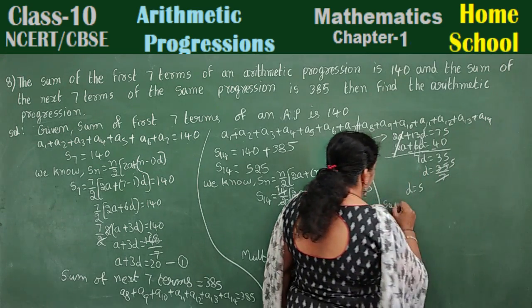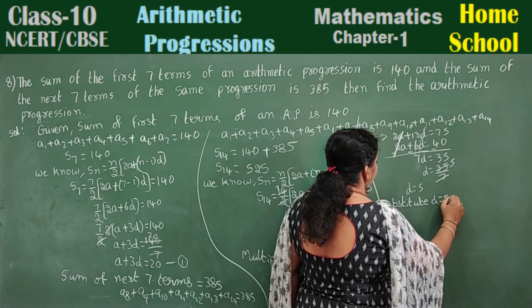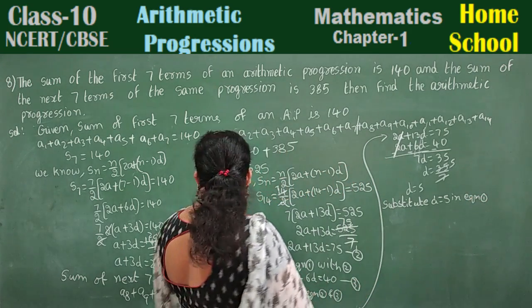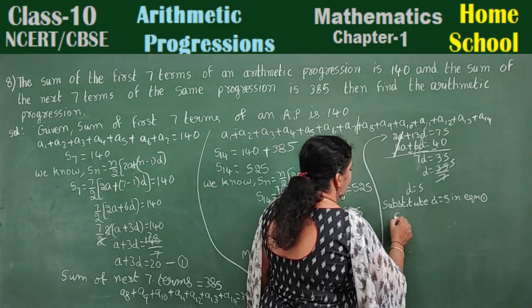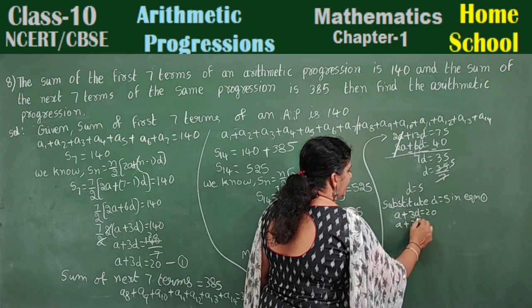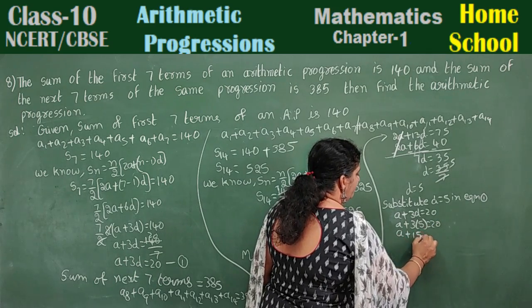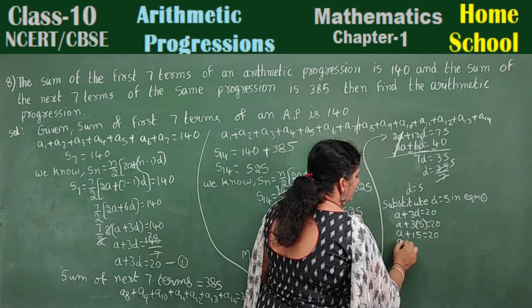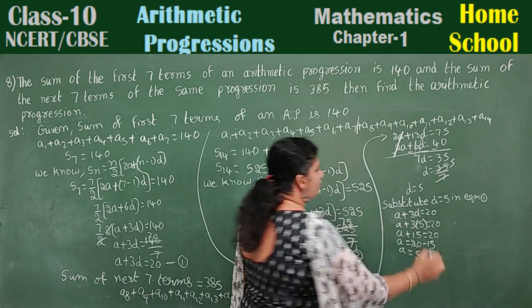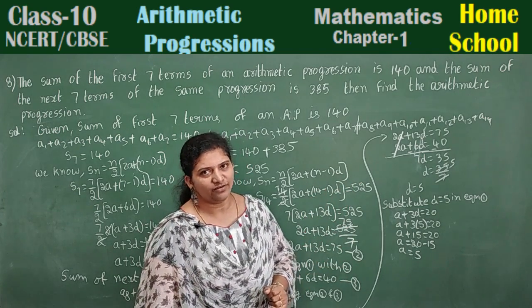Now substitute d equals 5 into equation 1. A plus 3d equals 20 becomes a plus 3 times 5 equals 20, so a plus 15 equals 20, therefore a is equal to 20 minus 15, which gives a is equal to 5. So the first term is 5 and the common difference is also 5.